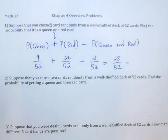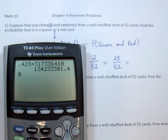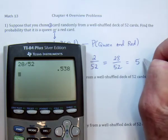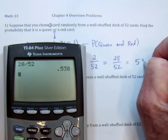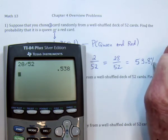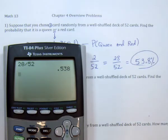Then divide: 28 divided by 52. You can leave the decimal answer, or I would prefer to give the percent: 53.8%.